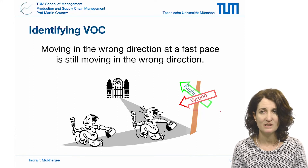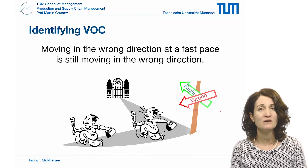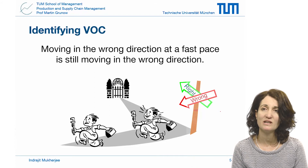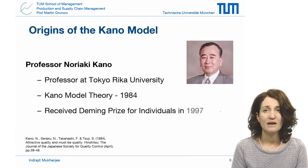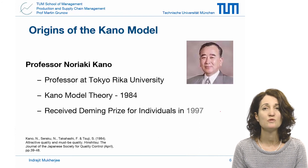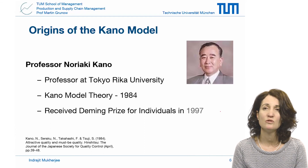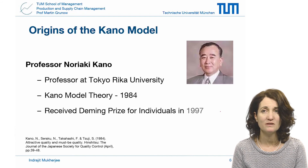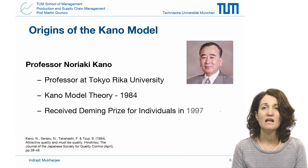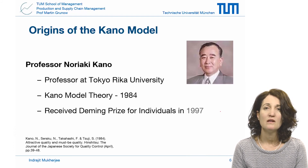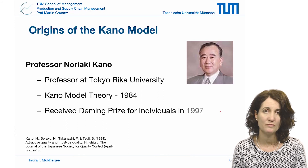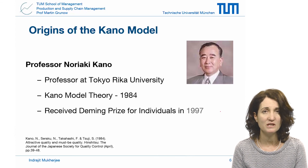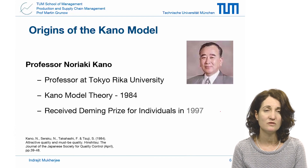So we need to identify first the voice of the customer, and then categorize and prioritize these needs. This must occur for every improvement project so that the critical to quality parameters reflect the important quality characteristics from the customer. One well-known method of categorizing and prioritizing customer requirements was proposed by Professor Noriaki Kano, a professor at Tokyo Rika University. The Kano model is a theory of product development and customer satisfaction developed in the 1980s, classifying customer preferences into different categories. The concept was first published in 1984 in the Journal of Japanese Society for Quality Control. Professor Kano received the prestigious Deming Prize for Individuals in 1997, recognizing his contribution to the field of total quality management.